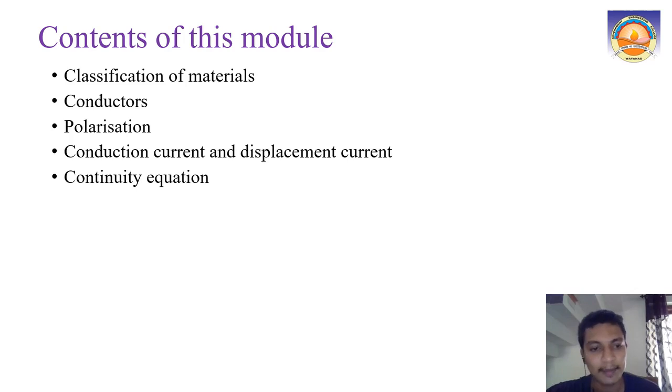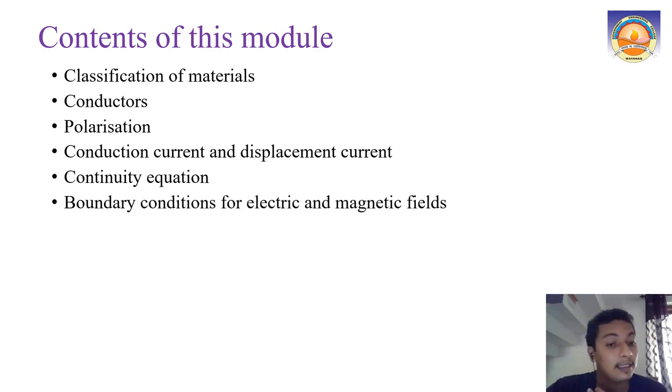The next section will be on boundary conditions for electric and magnetic fields, where we will discuss what happens at the boundary between two materials which will be having different permeability or permittivities. What will be the electric field density and magnetic field density at those boundaries? This is an important portion that we will be covering.